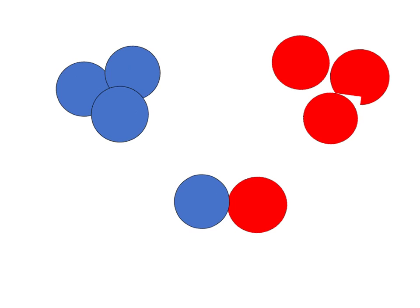You have two different elements of atoms with the blue and the red circles. Now, if these two were to form a compound, it would form like the one below that is shown right here.